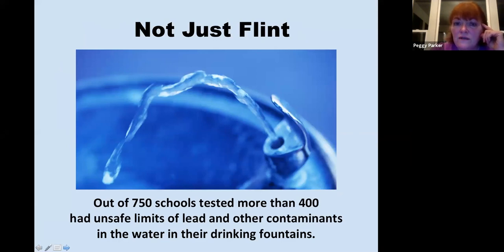So it's not just Flint. Out of 750 schools tested, more than 400 of them, that's more than half, had unsafe limits of lead and other contaminants in the water and the drinking fountains. This is for our children. Children are much more susceptible to the contaminants in water than most adults, unless elderly or chronically ill adults. Out of 750 schools, think about how many schools there are across the US, and more than half of them have unsafe limits. This is just not right.